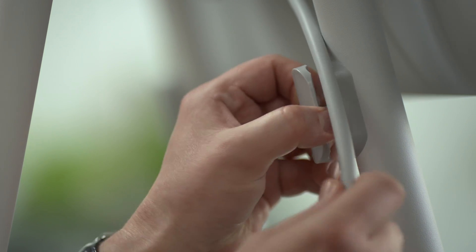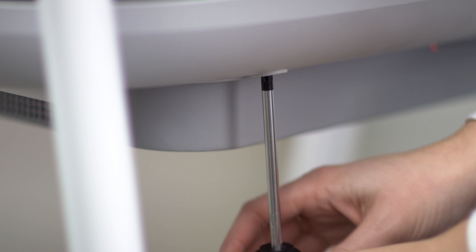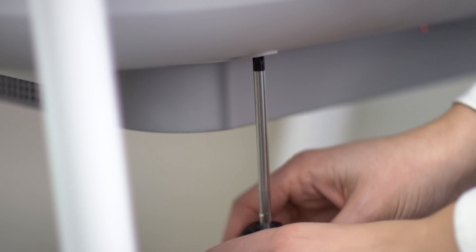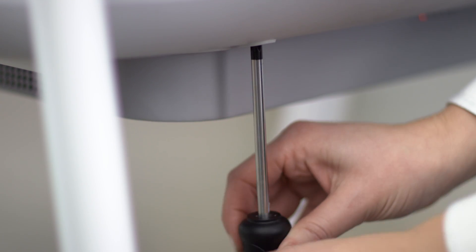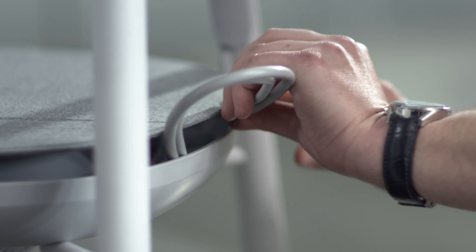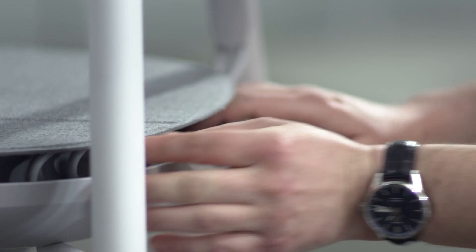When all the cables have been plugged in, run them through the guides on the legs for a tidy, clean look. Secure the tray in place from underneath using the remaining ten screws in the clear bag. You can wrap any excess cable around the inner ring of the tray.